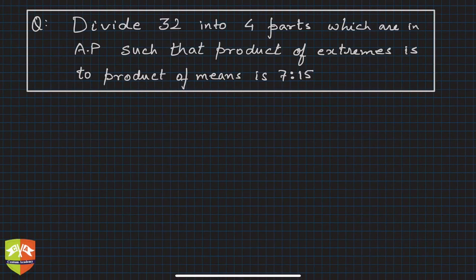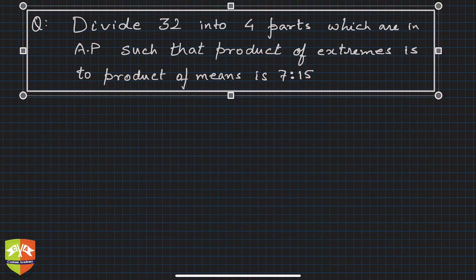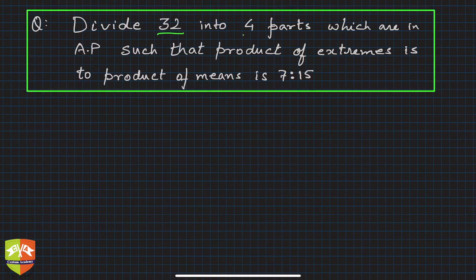Hello and welcome to another session on selection of terms in an AP. In this question, we have to divide 32 into four parts which are in AP, such that the product of extremes (first and fourth terms) is to product of means (second and third terms) is 7 to 15.